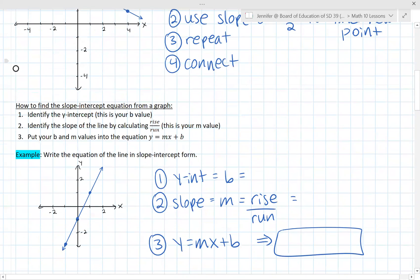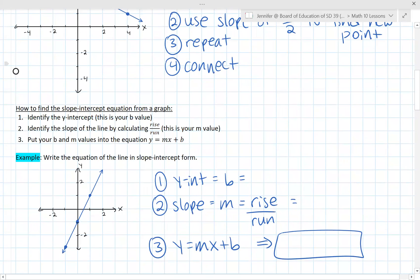Working the other way, if you're given a graph, how do you write the equation of that line in slope-intercept form? First, you're going to identify the y-intercept or where the graph crosses the y-axis, because that's going to be your b-value. Then you can identify the slope by counting your rise and then you just put that together into your equation. So for this example, our y-intercept or our b-value is right here at negative 1, because that's where the graph crosses the y-axis.